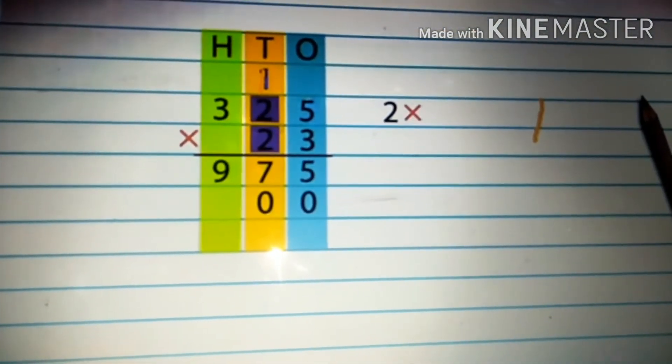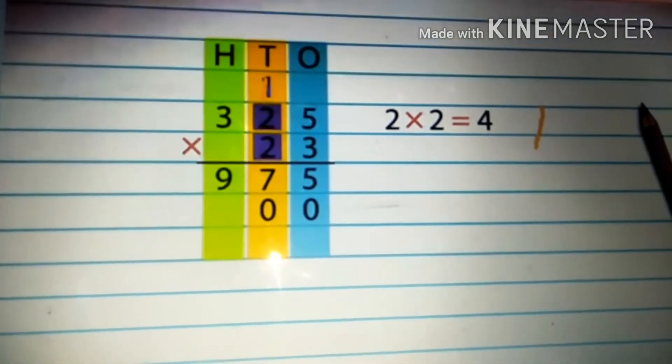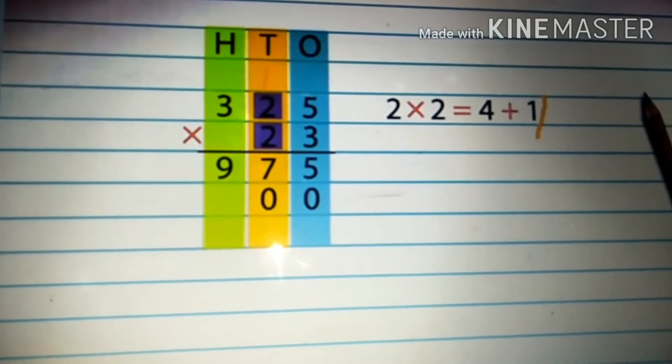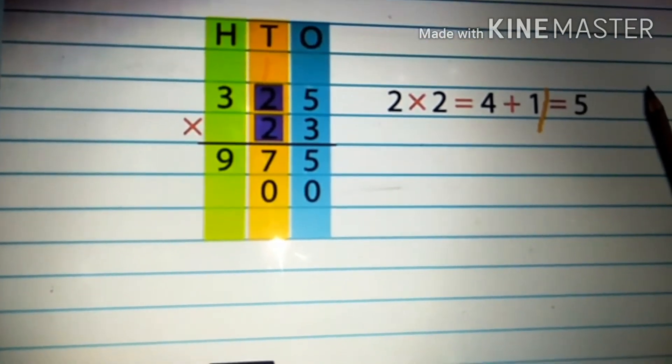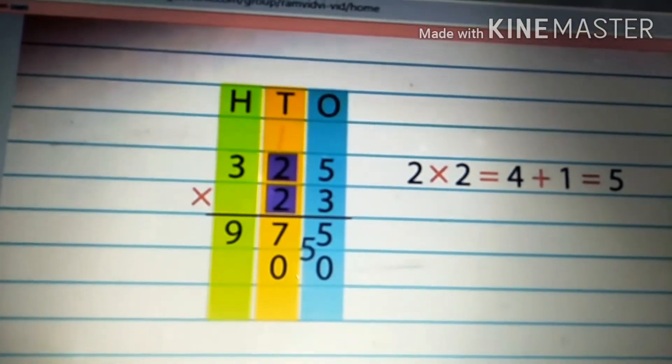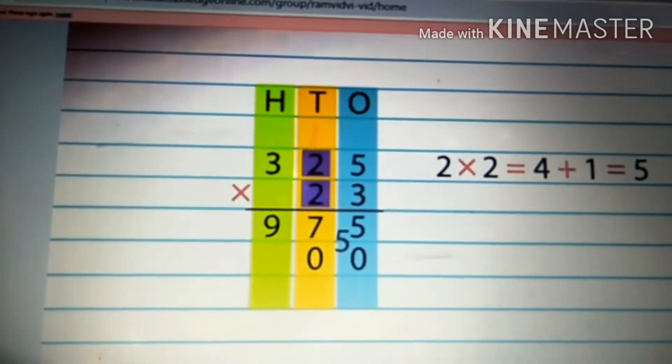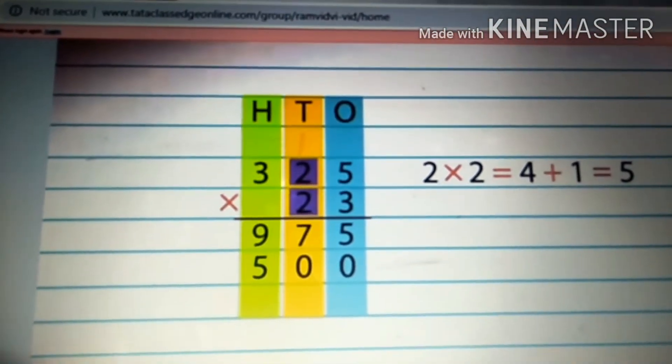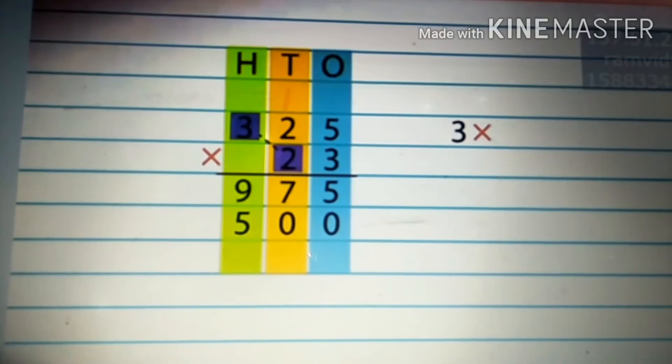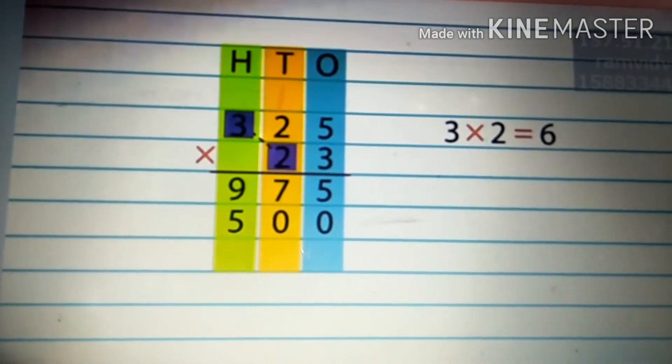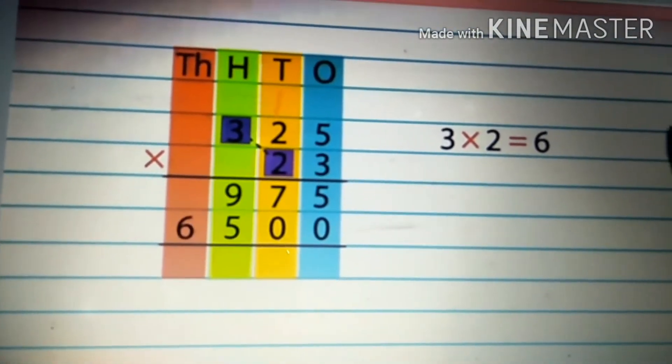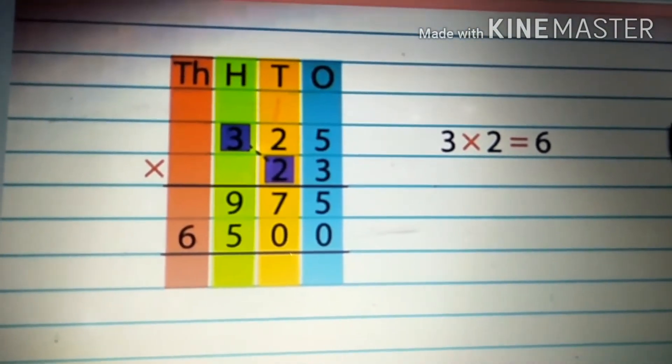Next, two by two gives four. We add the one in the hundreds column to four. We get five, so we write five in the hundreds column. Now, three twos gives six. Since there is no carry over, we directly write six in the thousands column.